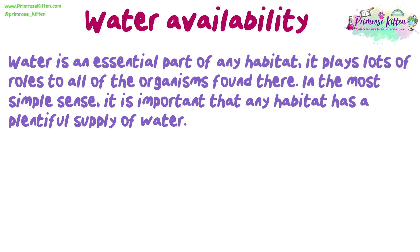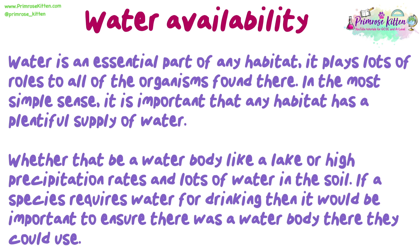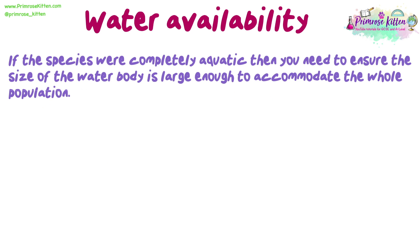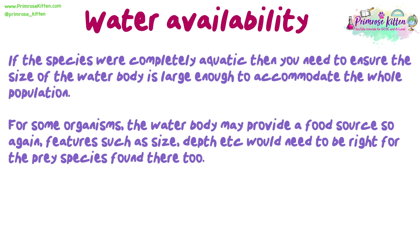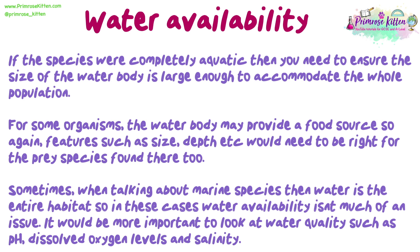Water is an essential part of any habitat and plays lots of roles for all the organisms found there. It is important that any habitat has a plentiful supply of water, whether that be a water body like a lake or high precipitation rates and lots of water in the soil. If a species requires water for drinking, it is important to ensure there is a water body they could use. If the species were completely aquatic, you need to ensure the size of the water body is large enough to accommodate the whole population. For some organisms, the water body may provide a food source, so features such as size and depth would need to be right for the prey species found there too. When talking about marine species, water is the entire habitat, so water availability isn't much of an issue — it would be more important to look at water quality such as pH, dissolved oxygen levels, and salinity.